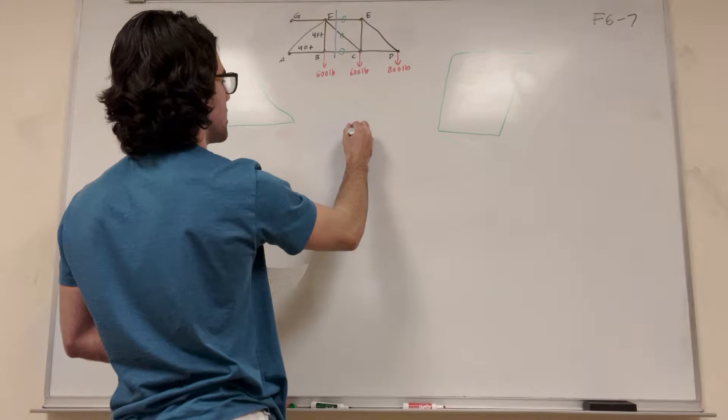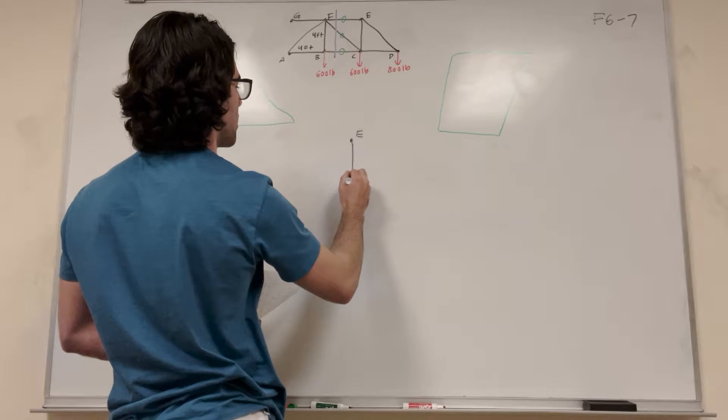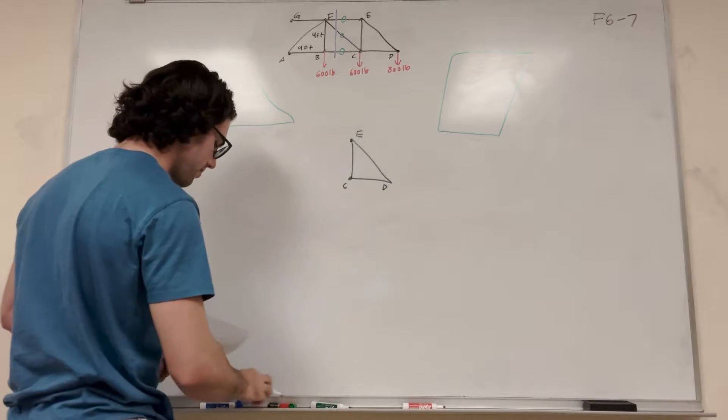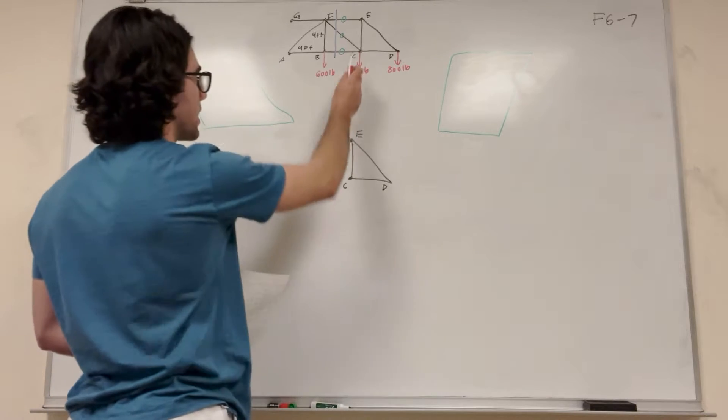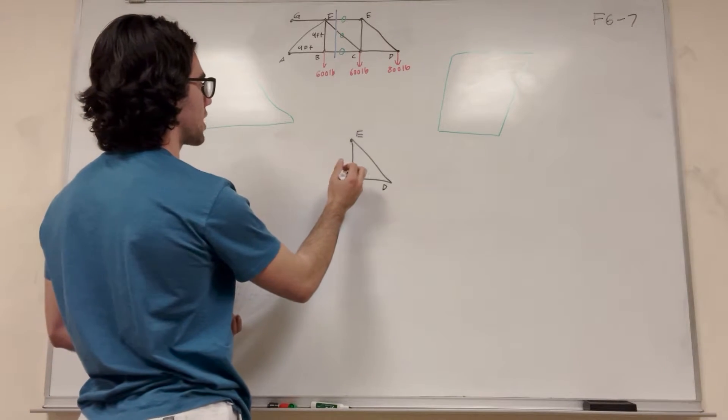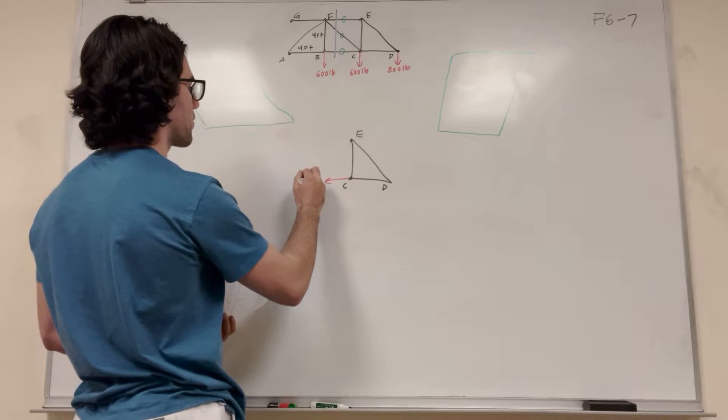So let's redraw this with the cut that we imagined. Bringing this down, this is E, this is C, this is D, it's connected. And then what happens now is this beam, it turns into a force that just points outward. So we're assuming tension on this, and this becomes force BC.